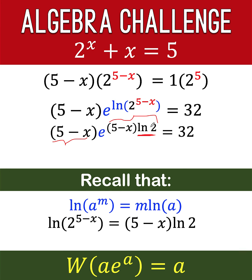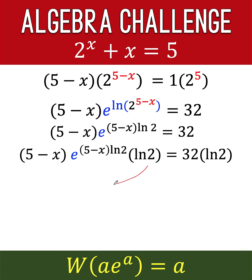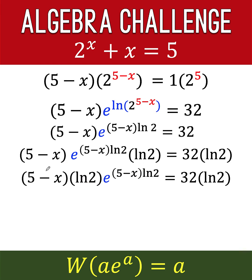We need to introduce that ln 2 into our equation. So we multiply both sides of the equation by ln 2. Then by the commutative property, we rearrange the order of the factors so that ln 2 is inserted next to 5 minus x, making the factor before e become 5 minus x times ln 2 — exactly matching the exponent of e. So this ln 2 is now written in that position and the right side is just copied.